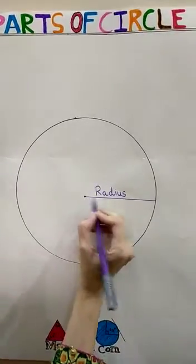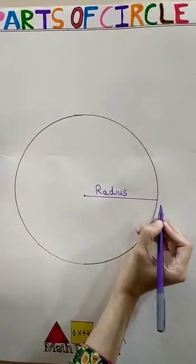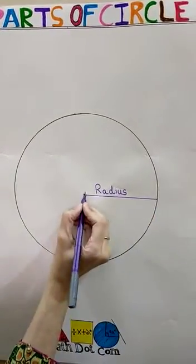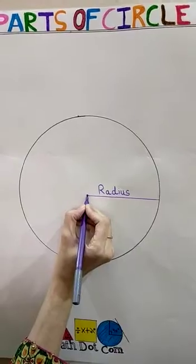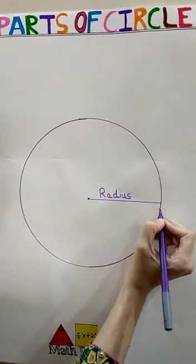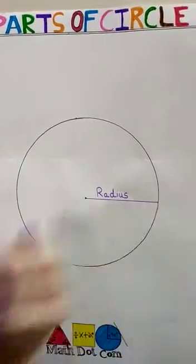This line is the radius of the circle. The radius is basically the distance between the center and any point on the boundary of the circle.